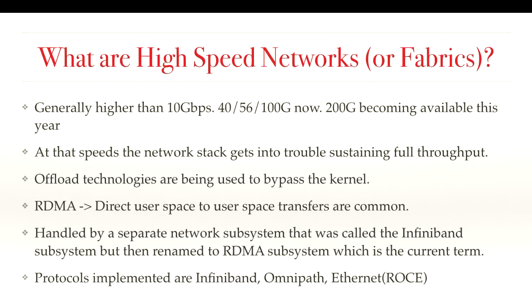So what are high-speed networks or fabrics? These are networks generally at speeds higher than 10 gigabits per second — 40, 56, 100 gig is typical in that area. There's a war between multiple vendors: Intel and Mellanox, and the speeds escalate every year or two. We hope to see 200 gigabits this year, and maybe in four to five years we'll reach one terabit per second.